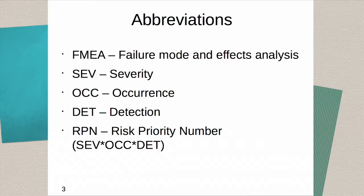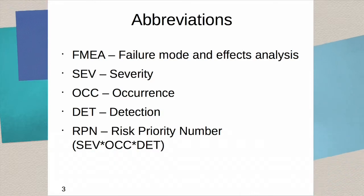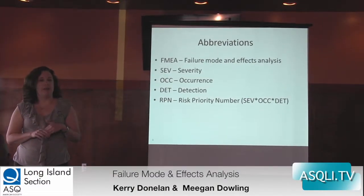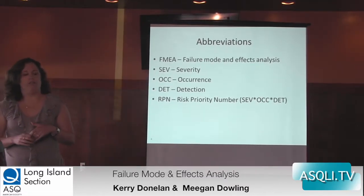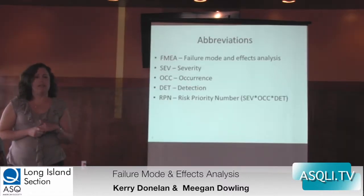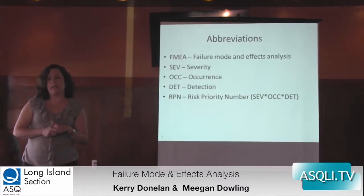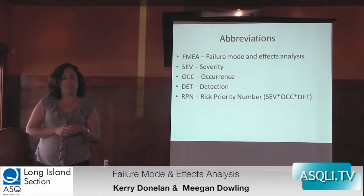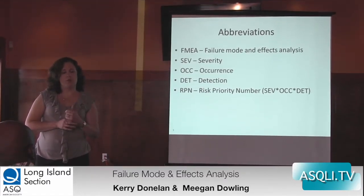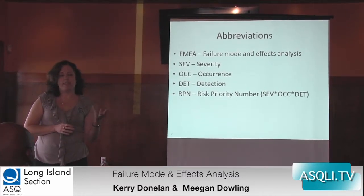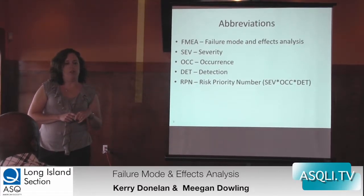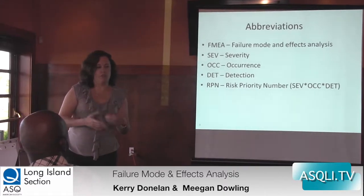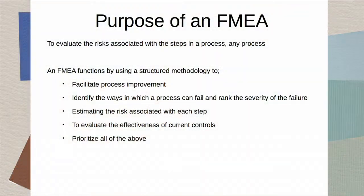Here are the abbreviations in the presentation. FMEA stands for Failure Mode and Effects Analysis. In the FMEA, we talk about severity, abbreviated SEV. Occurrence is OCC. Detection is DET. And we also talk about the RPN number — the risk priority number — which is your severity times your occurrence times your detection. You'll see those abbreviations throughout, and I'll remind you, but just so you have an idea.